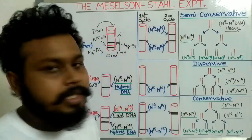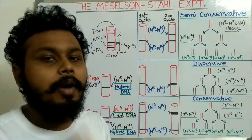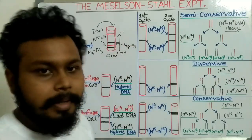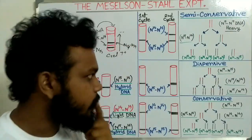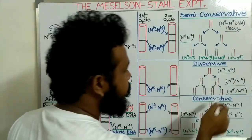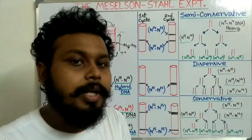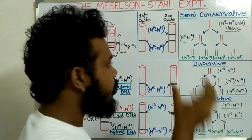After the first replication cycle we get an intermediate N15/N14 band, and after the second replication cycle we get one lighter N14/N14 band and one intermediate band. This matches the semi-conservative model, so we can say that the semi-conservative model is the correct model for DNA replication.